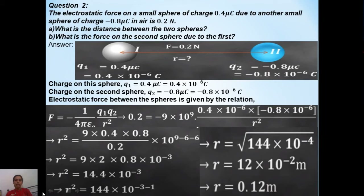Removing the decimal, we shift the point and adjust the power: r squared equals 144 into 10 to the power of minus 4. Taking the square root: square root of 144 is 12, and square root of 10 to the power of minus 4 is 10 to the power of minus 2. So r equals 12 into 10 to the power of minus 2.